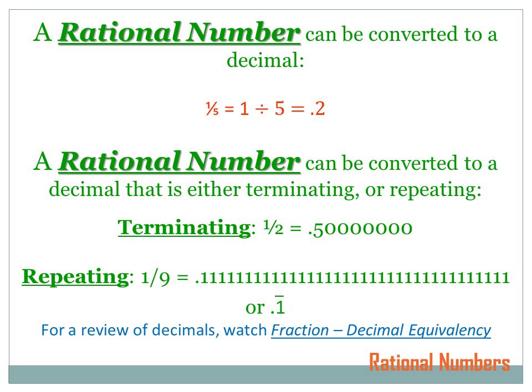Any rational number can be converted to a decimal. 1 over 5 can be converted to a decimal — it's a rational number. 1 over 5 equals 1 divided by 5, which equals 0.2. There are two kinds of decimals: a terminating decimal and a repeating decimal. A terminating decimal is one which, when we create the decimal, it ends — the numbers end and are followed by zeros. For instance, 1 half is a terminating decimal. 1 divided by 2 equals 0.5, or 0.5000... forever. It ends at the 5.